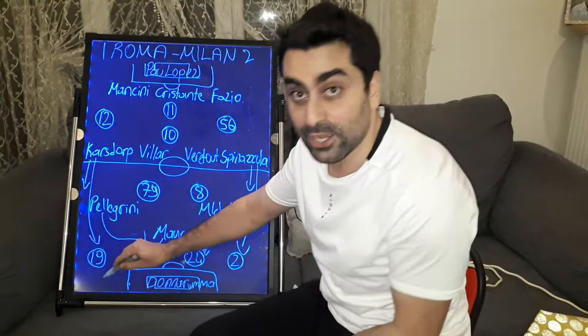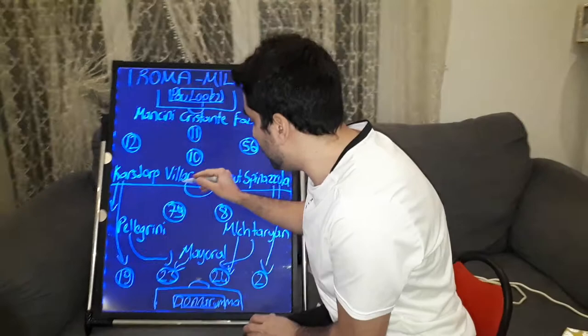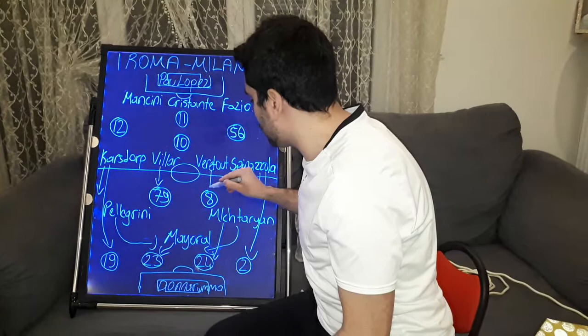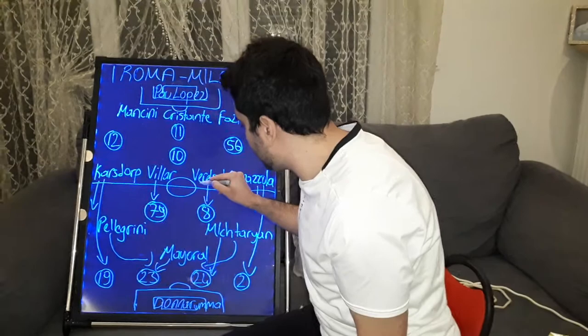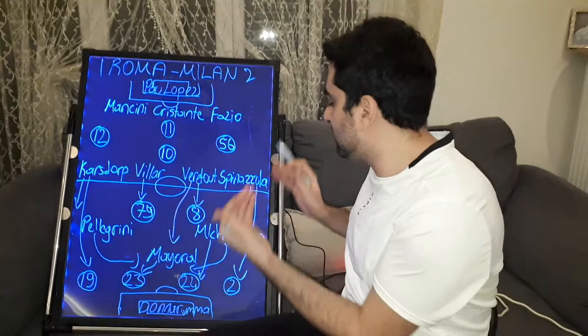In midfield, Villar played close to Kessie and Veretout played close to Tonali. Villar played more defensively while Veretout supported Roma's attacks. Veretout received the ball in midfield and carried it forward quickly, and Roma developed counter-attacks with Mkhitaryan, Veretout, and Pellegrini.